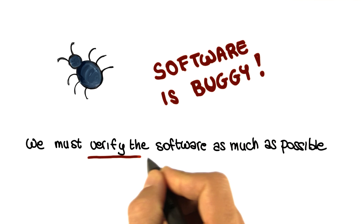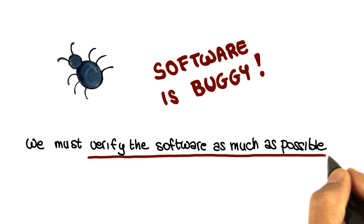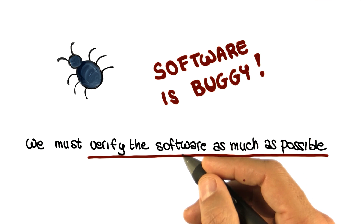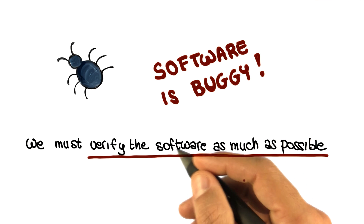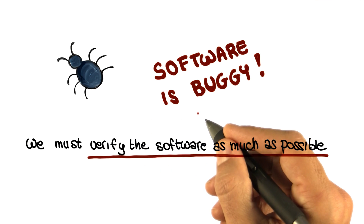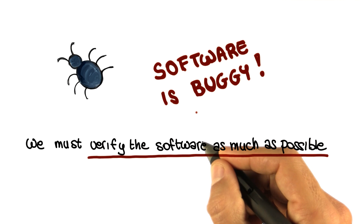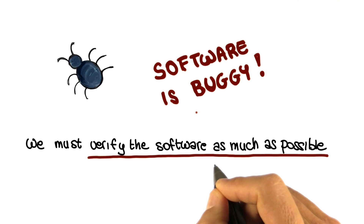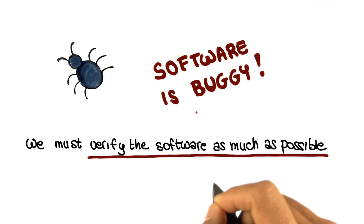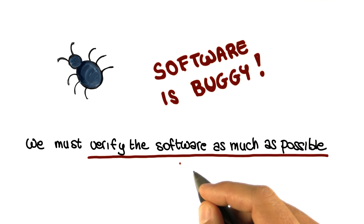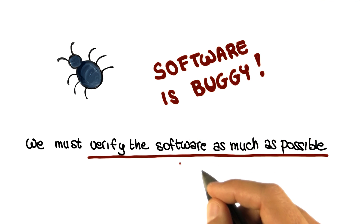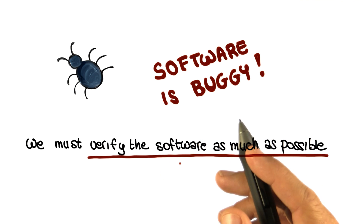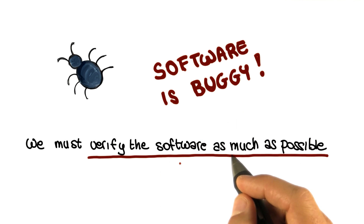What we need to do is to verify software as much as possible. In this part of the course, we will discuss how we can do this. We will discuss different alternative ways of verifying software systems, with particular attention to the most common type of verification, which is software testing. Before doing that, however, let me go over some basic terms that are commonly used — and often misused — in the context of software verification.